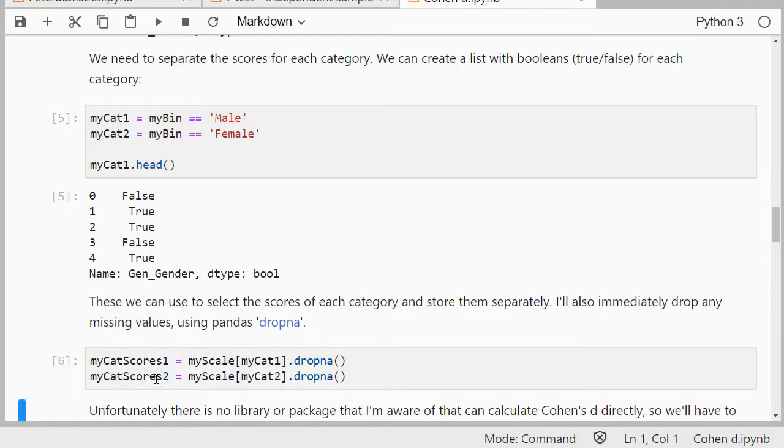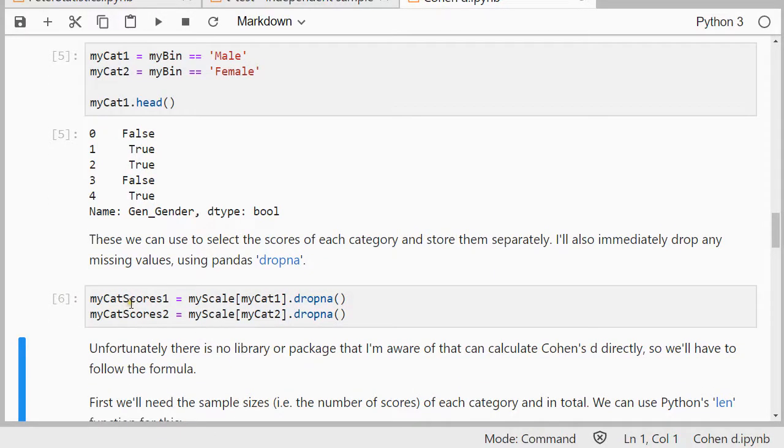So that should give us then nicely my cat1, all the scores of the males, and my cat2, all the scores of the females.